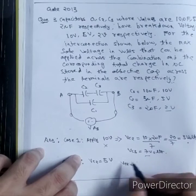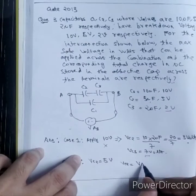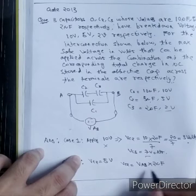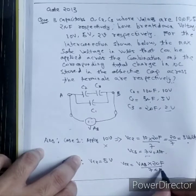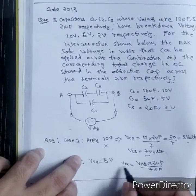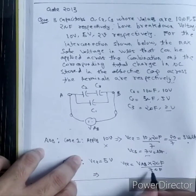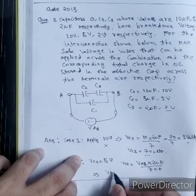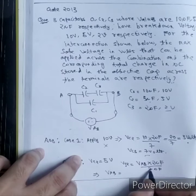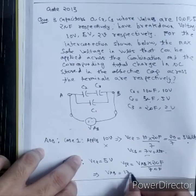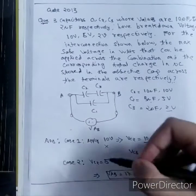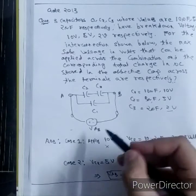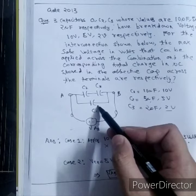VC2 will be equal to, using voltage division rule, VAB into opposite capacitance that is 2μF divided by 7μF. VC2 is 5V. This will be 5 into 7, 35. 35 divided by 2. From here VAB will be, 5 into 7 is 35, 35 divided by 2 is 17.5. If I use VC2 to be 5V, I am getting VAB as 17.5V.